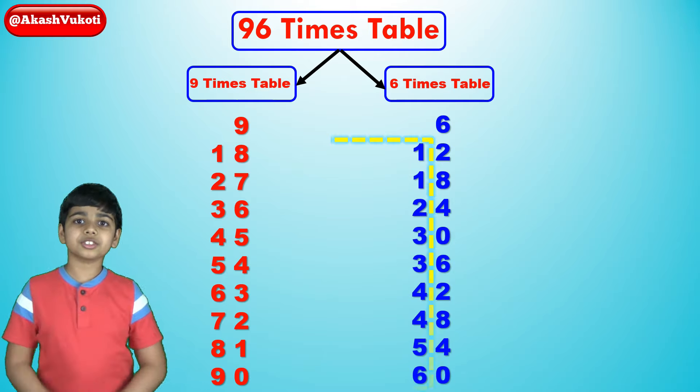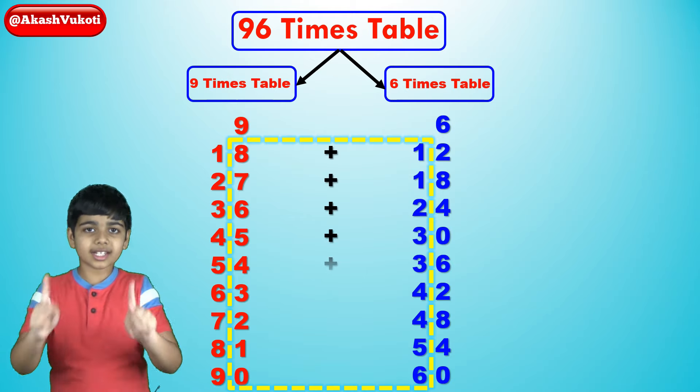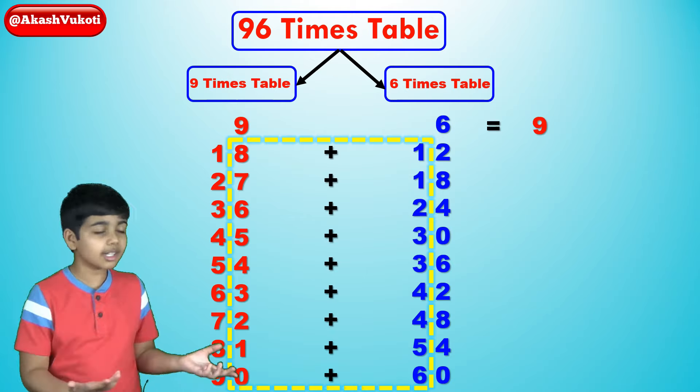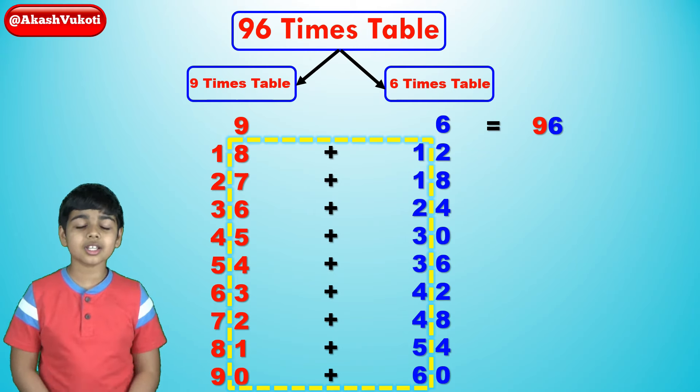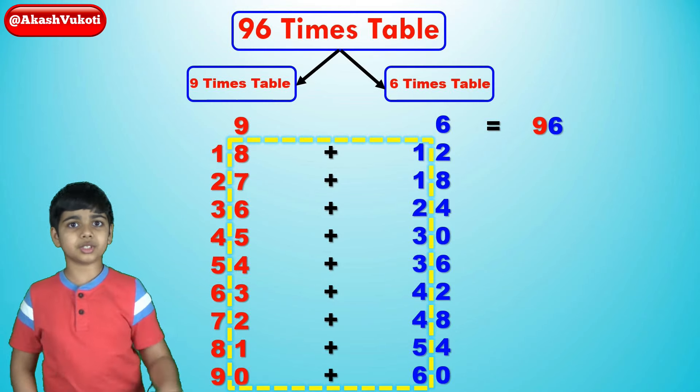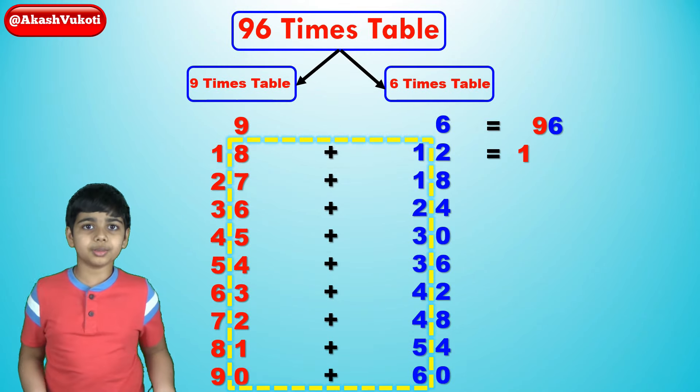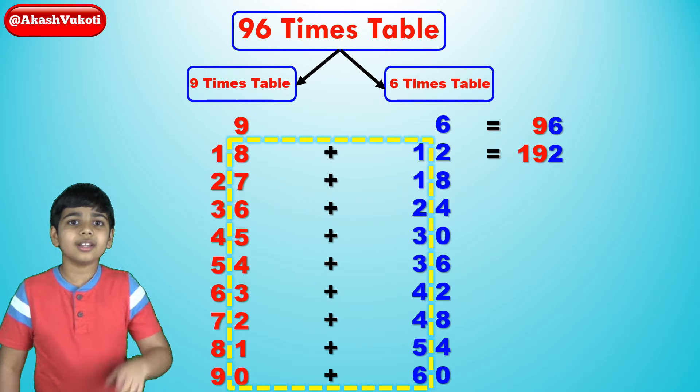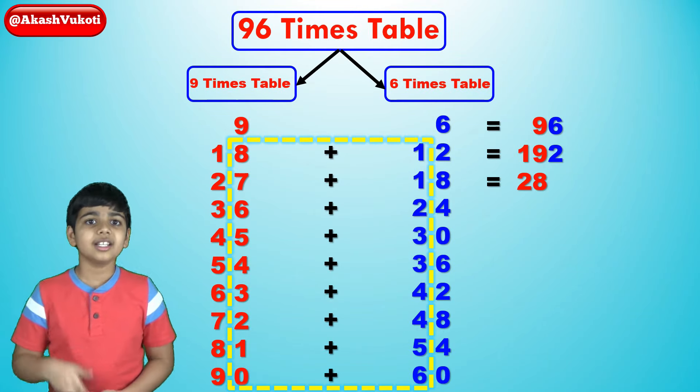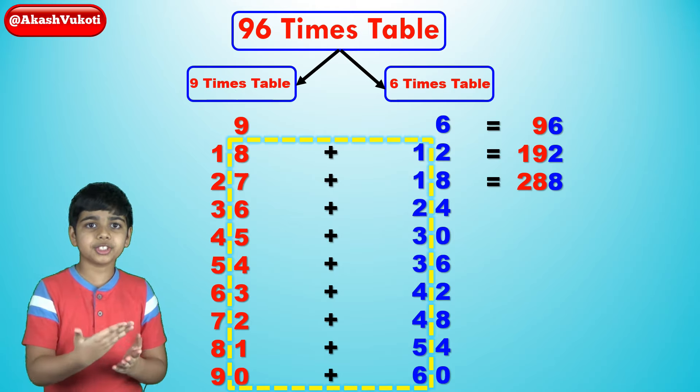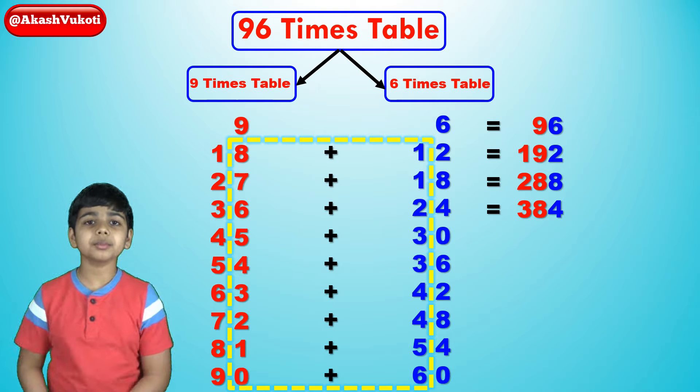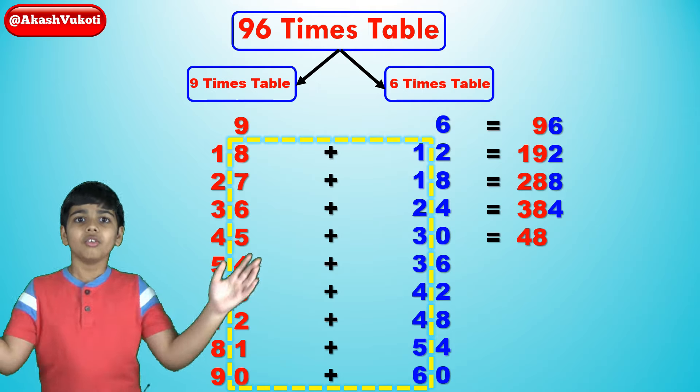Now, just put all of these answers together and we have the 96 times table. See, 96 times 1 is 9, 6, 96. 96 times 2 is 18, 12. So, with the 18 plus 1, that becomes 19. So, we get 192. Then, 96 times 3 is 27, 18 becomes 288. 96 times 4, 36, 24, 384. 96 times 5 becomes 45, 30, 480.